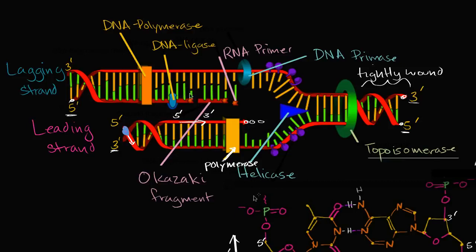You might ask: wouldn't it be easy if we could just add nucleotides at the five prime end? Then for the strand going three prime to five prime, a different polymerase could just keep adding nucleotides that way, and everything would be easy. It turns out that is not the case — you cannot add nucleotides at the five prime end. This strand over here has a three prime end on this side and a five prime end on that side, so you can't just keep adding nucleotides in that direction.